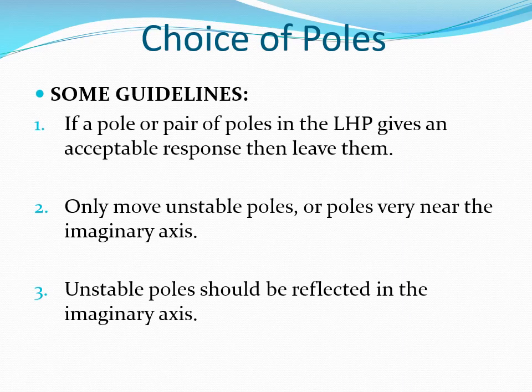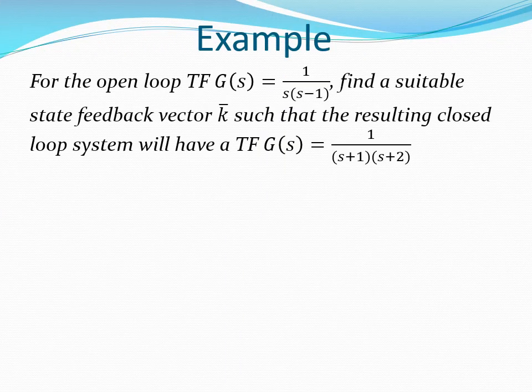In the design examples that we have looked at so far, the required pole positions were given. In real designs, it will be important for the designer to be able to decide on the positions of the closed loop poles. There are some guidelines that can be used to decide on these positions: 1. If a pole or a pair of poles is in the LHP and gives an acceptable response, we leave it as it is. 2. Only move unstable poles or poles that are very near the imaginary axis. 3. Unstable poles should be reflected in the imaginary axis.